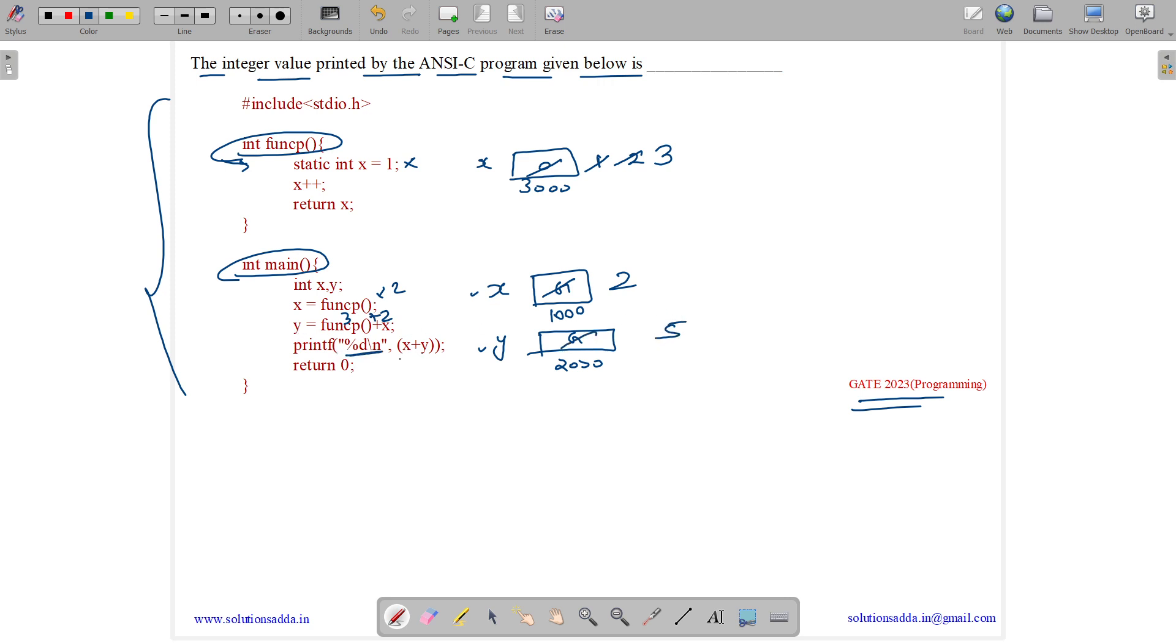Then we are printing just x plus 5. So what is 2 plus 5? It's 7. So the answer to this question is 7.